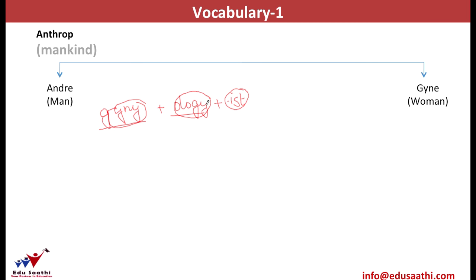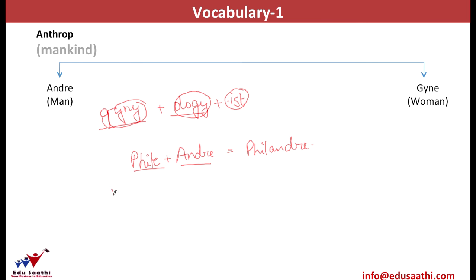Can you make a word that means a person who loves men? Since I said a person who loves men, the word will have two roots: phile and andri. Thus, a person who loves men is known as a philanderer. What will you call a person who hates women? Since he hates, the word will have 'miso,' and he hates women, so the word will have 'gynec.' Thus, a misogynist is the one who hates women.